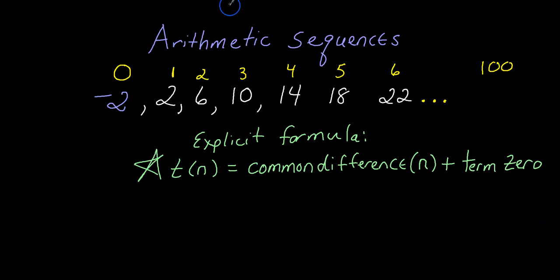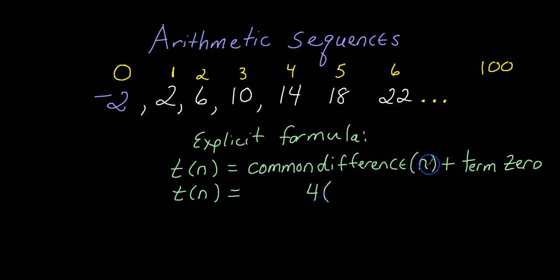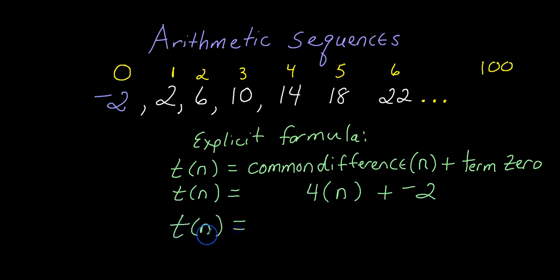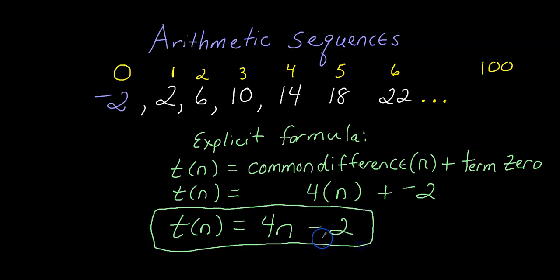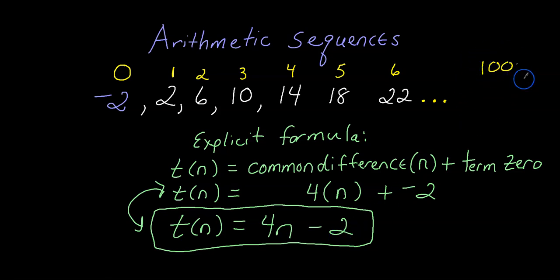So plugging in our values, the explicit formula becomes: T(n) equals 4 times n plus negative 2, which simplifies to T(n) equals 4n minus 2. Adding a negative is the same as subtracting, so we write it as 4n minus 2. We'll use this to find term 100 quickly.